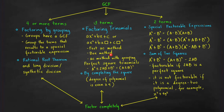You may also use Bach's method, AC method with grouping, or if you see that the trinomial is a perfect square trinomial, just use the factoring formula for perfect square trinomials. Or you may also try completing the square — use this method only when the degree of the polynomial is even and greater than or equal to 4.